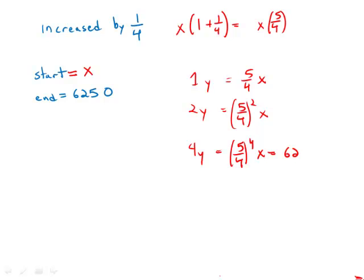And of course, this is what's going to equal 6,250. So the question is, how do we figure out five-quarters to the fourth without a calculator? Well, first of all, five-quarters to the fourth, that's just going to be five to the fourth over four to the fourth. So we can figure out those separately.